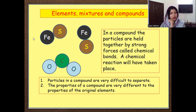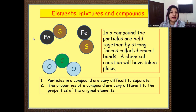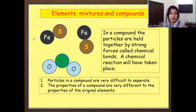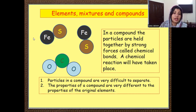For example, sugar in water — when we dissolve sugar in water, that is a mixture, not a compound, because we can easily separate them using filtration, evaporation, or heating. But when we talk about a compound, like carbon and oxygen combined to form carbon dioxide gas, it is very difficult to separate them.